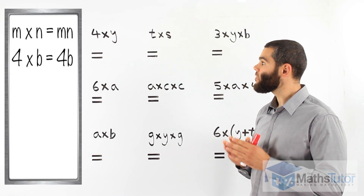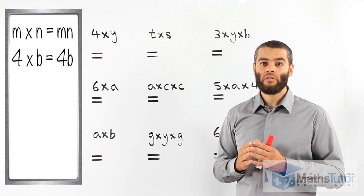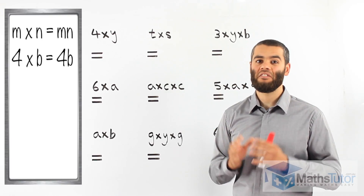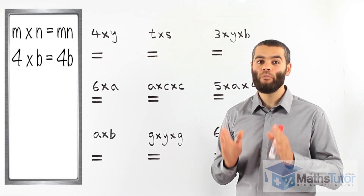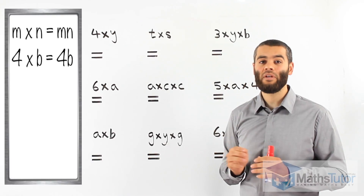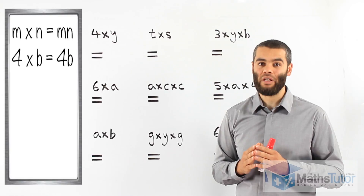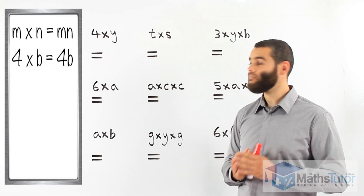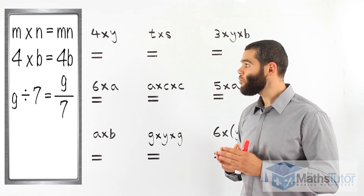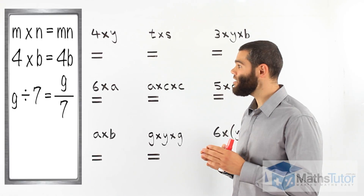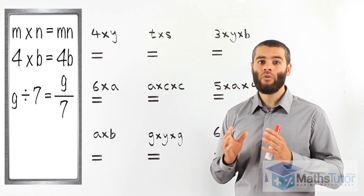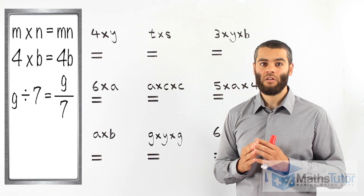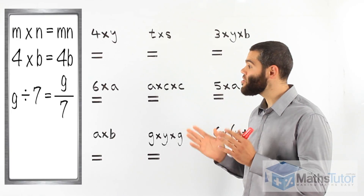We also have 4 times B. B is a number, but we don't know what it is. So 4 times B is exactly the same as 4B — we write it as 4B. For division, when we have G divided by 7, we write it in fraction form: G over 7.